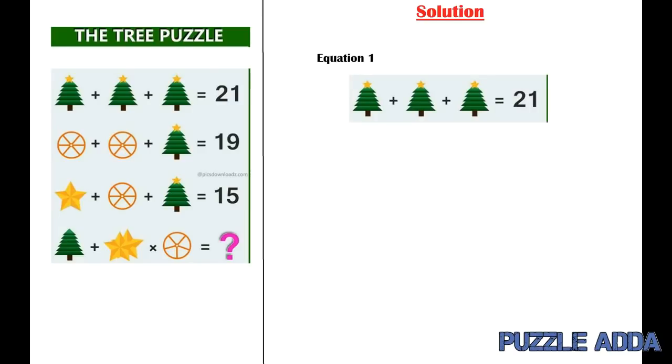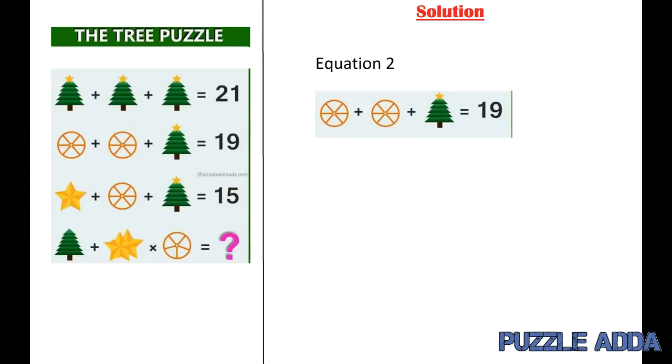In the first equation we have a tree with star plus a tree with star plus a tree with star which is equal to 21. So we can say a tree with star is equal to 7.